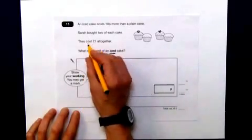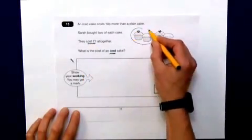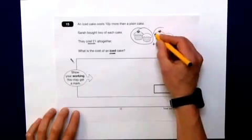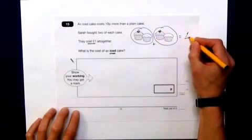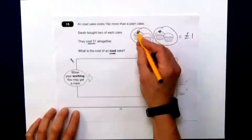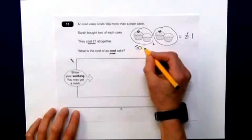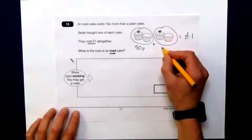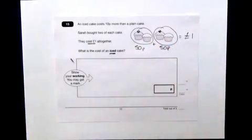Well, in this example, the diagram actually gives us a bit of a clue. The whole lot costs £1 altogether. So that added to that equals my £1. So that bit there must equal 50p, one cake of each. This bit here must equal 50p. How can that help us?